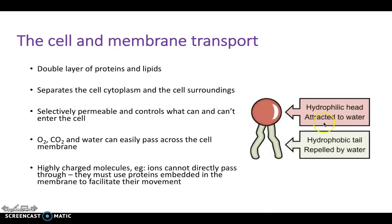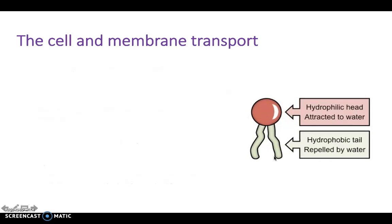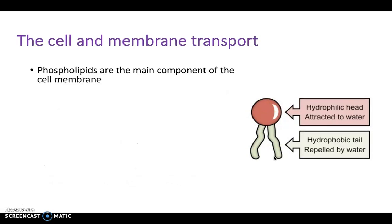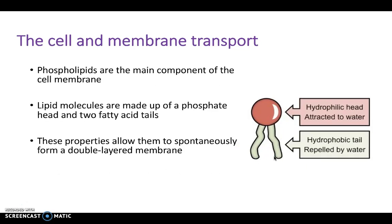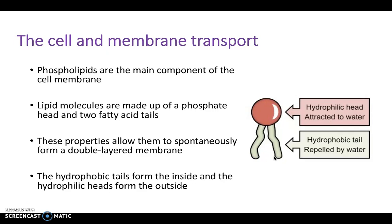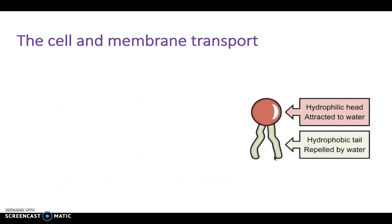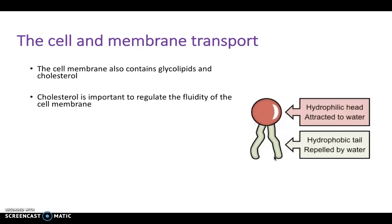The membrane is made up of phospholipids, which have got a hydrophilic head — in other words, attracted to water — and a hydrophobic tail, repelled by water. Phospholipids are the main component of the cell membrane. Lipid molecules are made up of the head and the two fatty acid tails, and this forms a double-layered membrane. The cell membrane also contains things such as glycolipids and cholesterol.